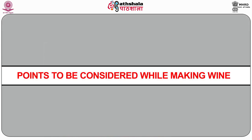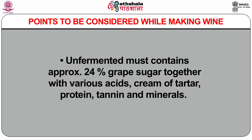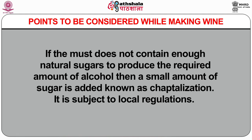Points to consider while making wine: during fermentation, sulfur dioxide is added to the must to kill any harmful wild yeast and any bacterial contamination. Unfermented must contains approximately 24% grape sugar together with various acids, cream of tartar, protein, tannin and minerals. If the must does not contain enough natural sugar to produce the required amount of alcohol, a small amount of sugar is added — known as chaptalisation — subject to local regulations. Every gram of sugar in the must is converted to about half a gram of ethyl alcohol. Fermentation stops when all the sugar is converted to alcohol or when all the yeast are killed.